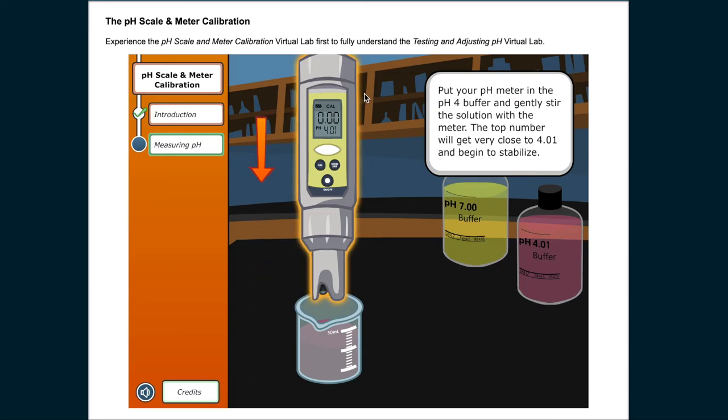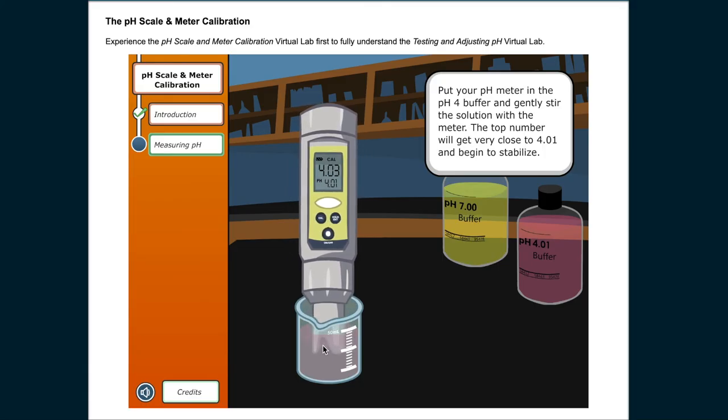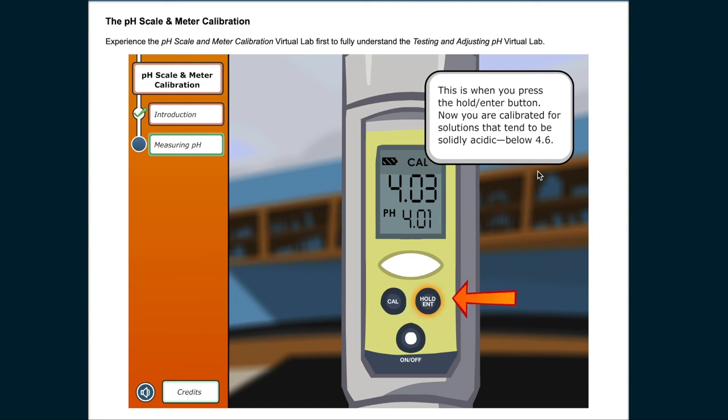Put your pH meter in the pH 4 buffer and gently stir the solution with the meter. The top number will get very close to 4.01 and begin to stabilize. This is when you press the hold enter button. Now you are calibrated for solutions that tend to be solidly acidic, below 4.6.